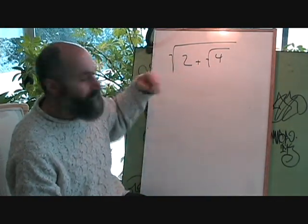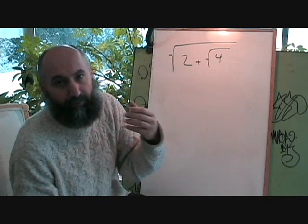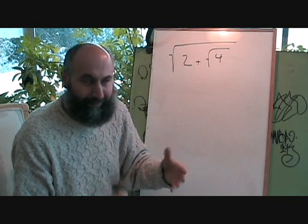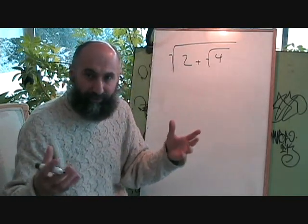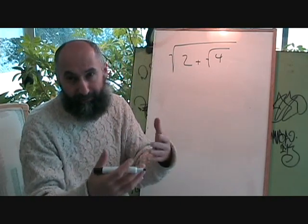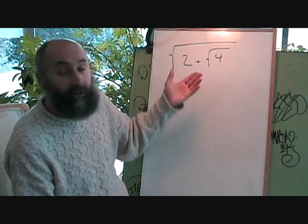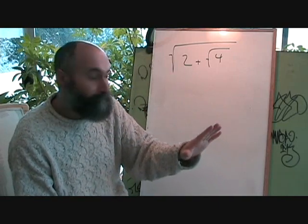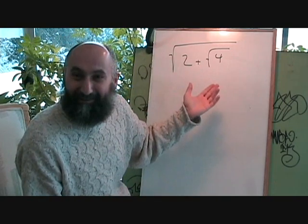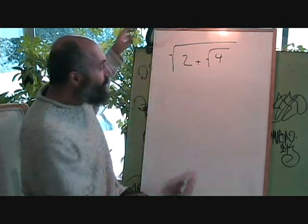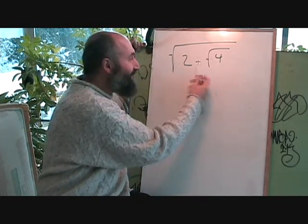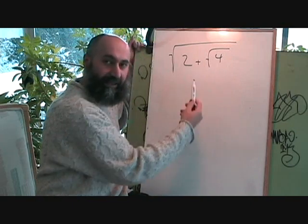Now the way this works is — I'm assuming you've already gone through your order of operations, where brackets go first, then exponents, then multiplication and division, then addition and subtraction. So I'm assuming you know the order of operations. If you get something like this where there's addition inside a radical, you have to deal with the inside first.